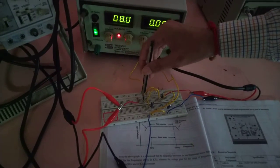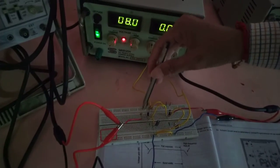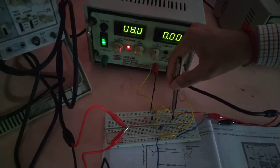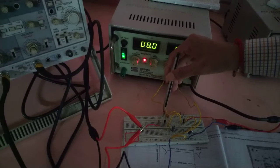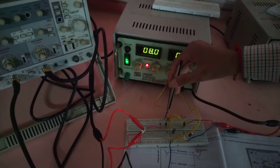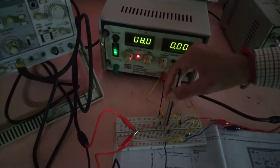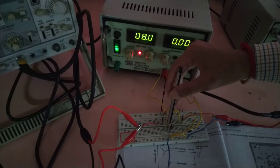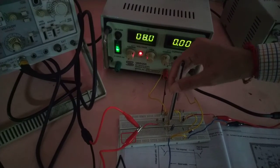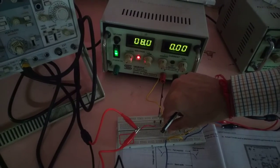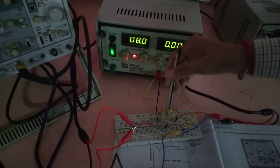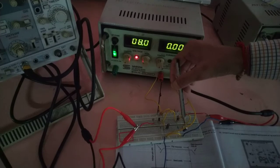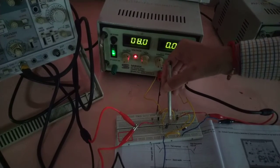These two are the transistors BC548 and these two are the coupling capacitors 104 ceramic type. Then R1, R2, this is RC 1.5 kilo ohm, this is 470 ohm RE. Then these two are the bypass capacitors of 10 microfarad.